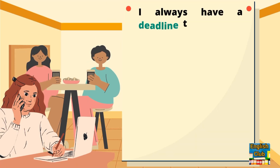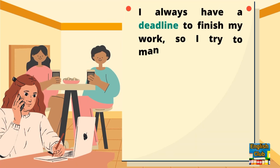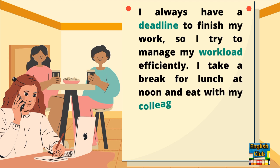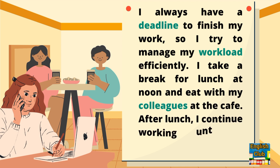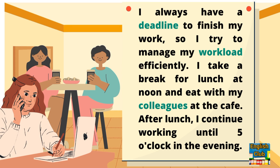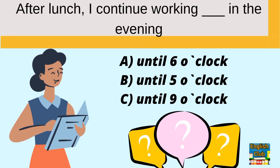I always have a deadline to finish my work, so I try to manage my workload efficiently. I take a break for lunch at noon and eat with my colleagues at the cafe. After lunch I continue working until 5 o'clock in the evening. After lunch I continue working until — A: 6 o'clock, B: 5 o'clock, C: 9 o'clock — in the evening.